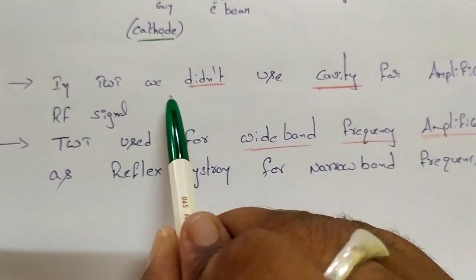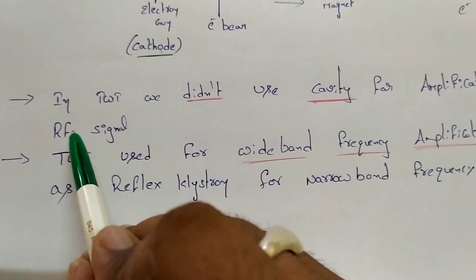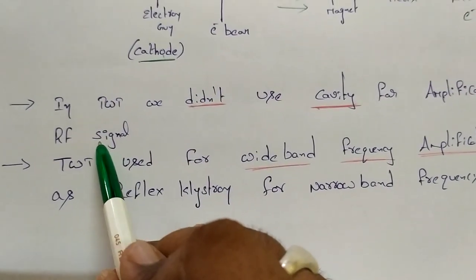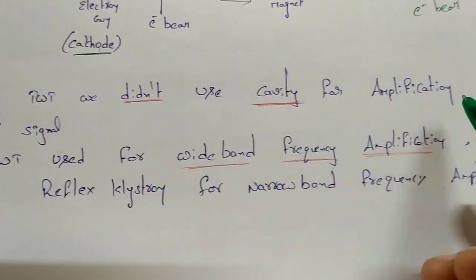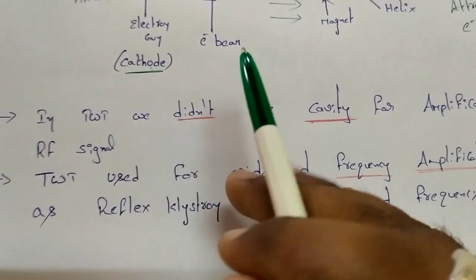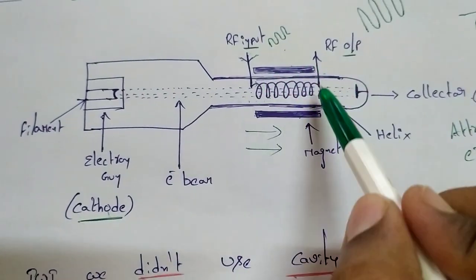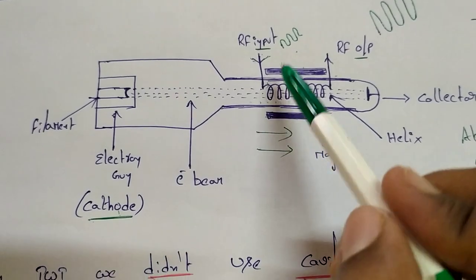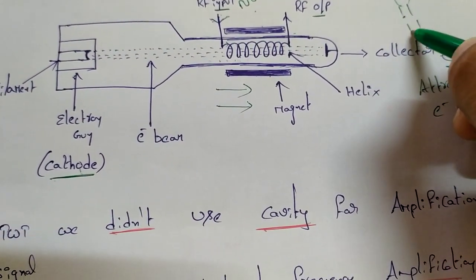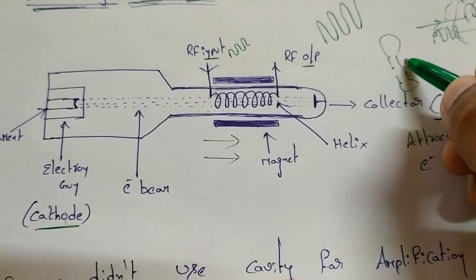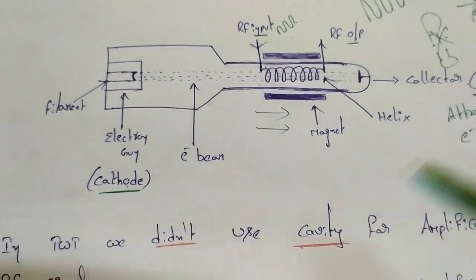In TWT, we do not use a cavity for amplification of the RF signal. We don't use the cavity here, unlike the Reflex Klystron which uses a cavity.